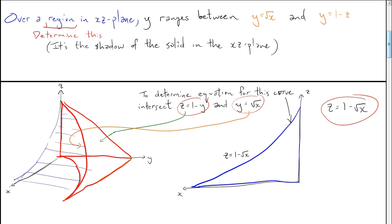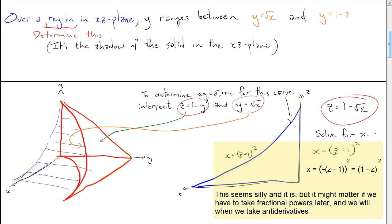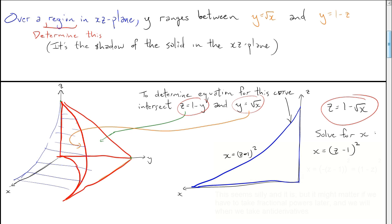Since we integrate with respect to x after y, the order is dy dx dz, so we describe the curve in terms of x. Rearranging gives x equals (z minus 1) squared. It's a parabola opening along the x axis shifted by 1. Of course, x equals (1 minus z) squared is exactly the same description — this will factor into later calculations where we need to be careful about how we describe things.